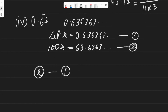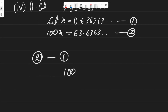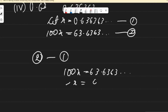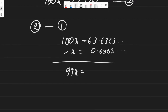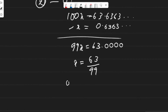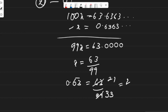Subtracting the first equation from the second: 100x − x = 63.6363... − 0.6363..., so 99x = 63, giving x = 63/99. Dividing by 3 we get 21/33.